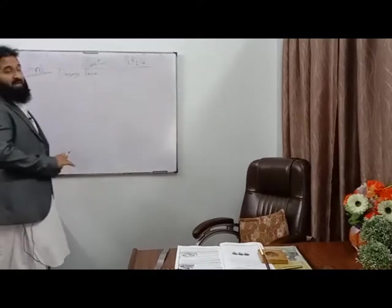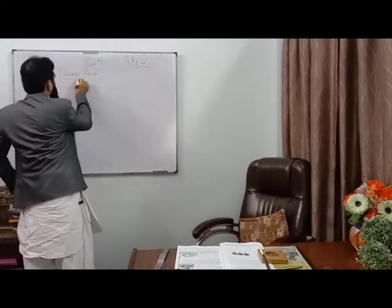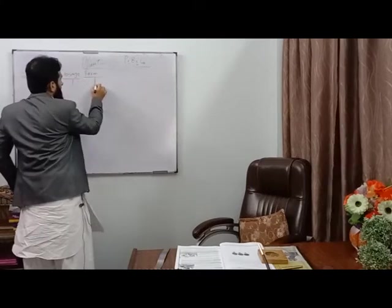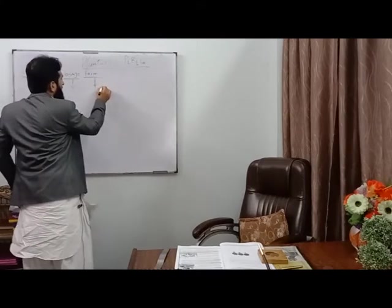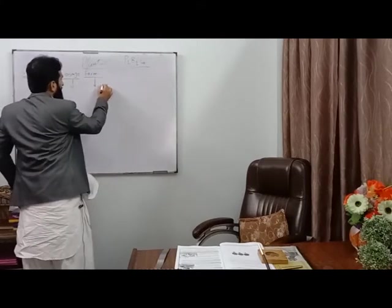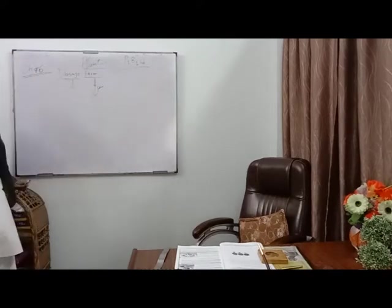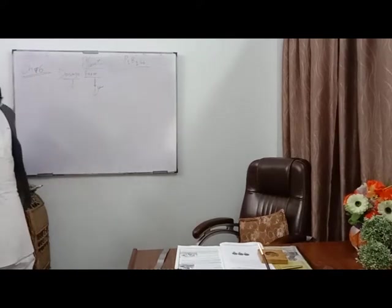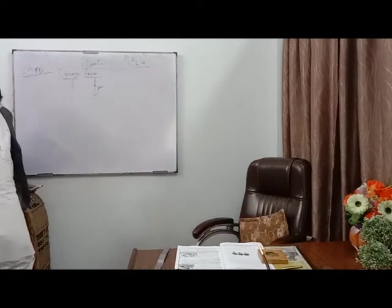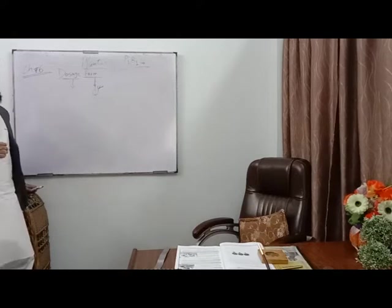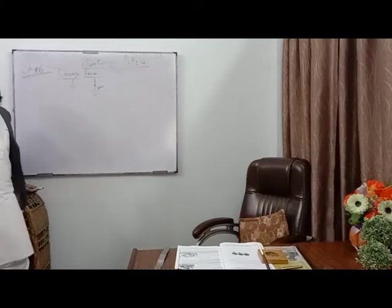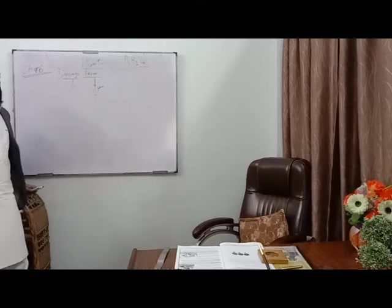Today we will start Chapter Number Six, which is Dosage Forms. Here there are two words: first is 'dosage' and second is 'form.' Form means shape. Dosage means when a medicine is given in a specific quantity — that specific quantity is called a dose. For example, Omeprazole 20 mg — that specific quantity is the dose.